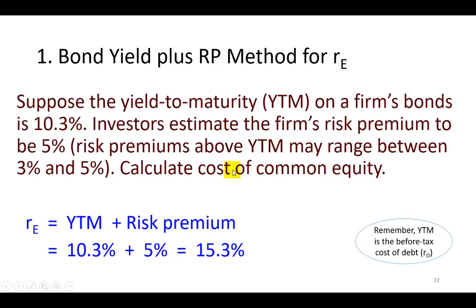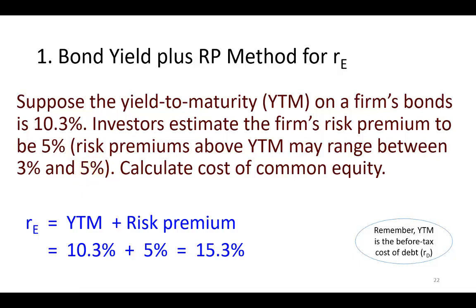Here we go with the first example utilizing the bond yield plus risk premium approach. This method simply says: find the cost of debt for the firm, also known as the yield to maturity, and to that we're going to add a risk premium, which generally tends to range from 3% to 5%. It would be on the low end if the firm is a low risk firm with a high credit rating, and at the high end if it's a particularly risky firm with a very low credit rating.